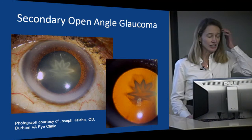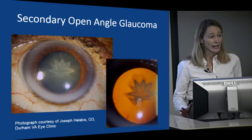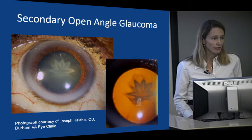Trauma can also lead to secondary open angle glaucoma. Blunt trauma to the eye can cause a very typical rosette-appearing cataract, as shown in this photo. It can also damage the outflow facility of the eye and lead to glaucoma even 10, 20, or 30 years later after the trauma.